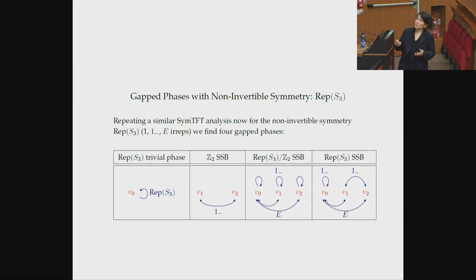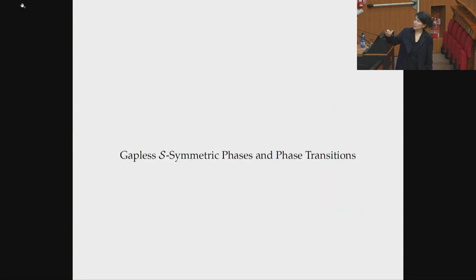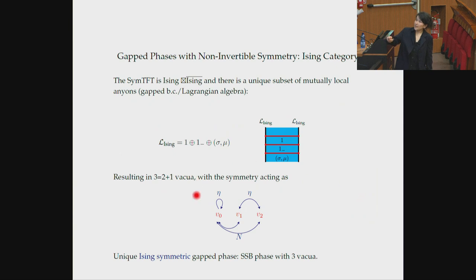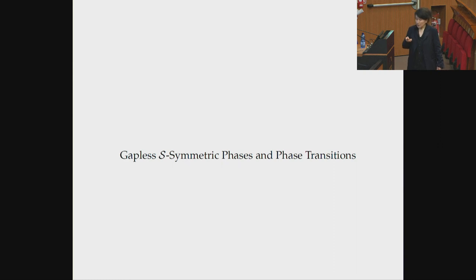For Rep(S3), we already wrote down all four Lagrangians. There are four symmetric phases: a trivial phase, a Z2-SSB phase, a Rep(S3) mod Z2-SSB phase, and the full spontaneously broken symmetry phase. This is reminiscent of the Ising case, but with a crucial difference: in this case there are relative Euler terms, so this phase can be distinguished from the Ising case. For gapped phases, the SymTFT gives a complete classification by just classifying Lagrangians.